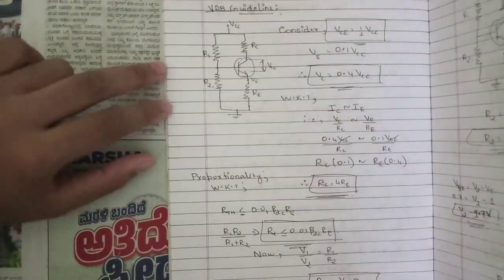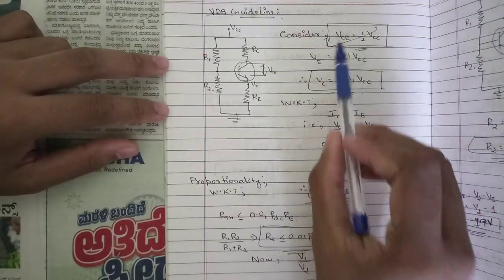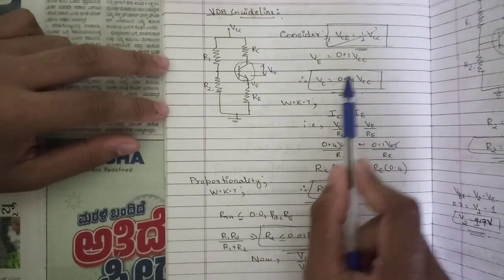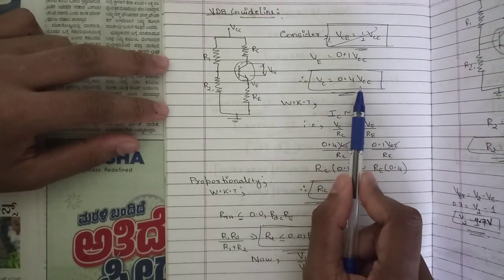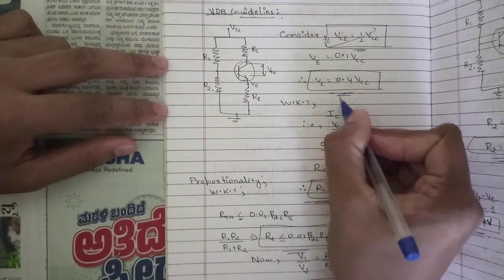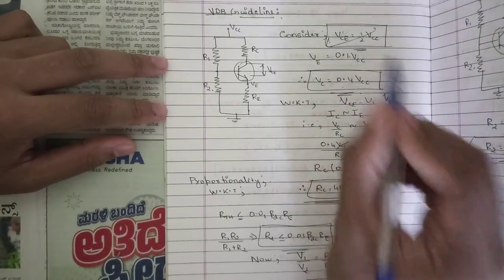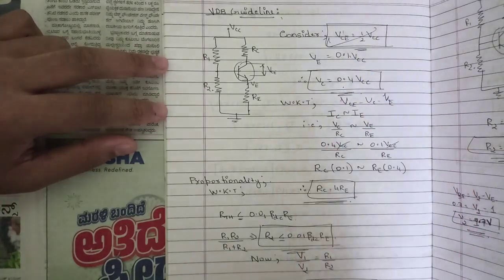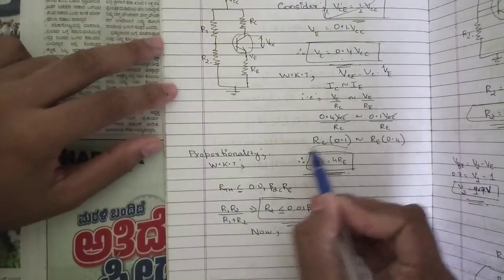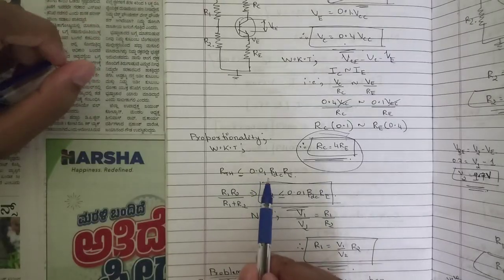One question related to the VDB (voltage divider bias) guideline will be asked. The relationship is: VCE = 0.5 × VCC and VE = 0.1 × VCC, so VC = 0.4 × VCC (that is 0.5 minus 0.1). Since VCE = VC minus VE, we get VC = 0.4 VCC. From this we get the relation RC = 4 × RE. Then apply the Thevenin condition: Rth = 0.01 × β_DC × RE, where Rth = R1 parallel R2 = (R1 × R2) / (R1 + R2).